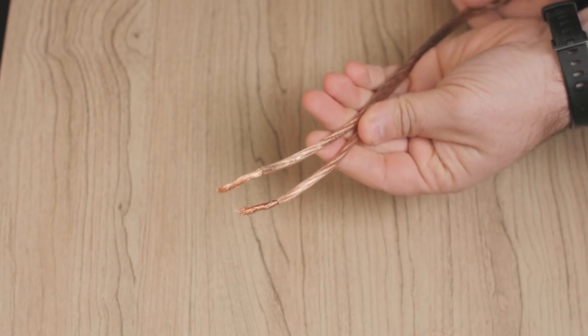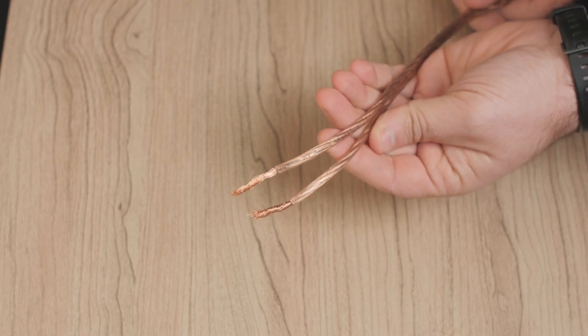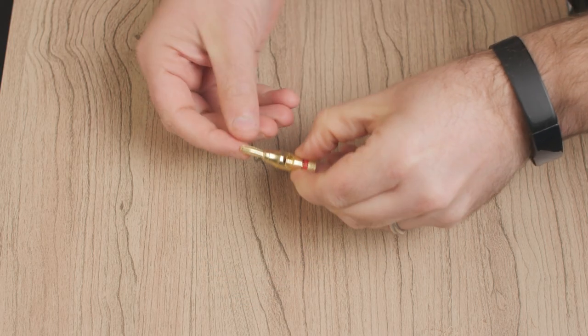Connecting your speakers to an amplifier or receiver can be done in one of five ways. Bare wires. Banana plugs.